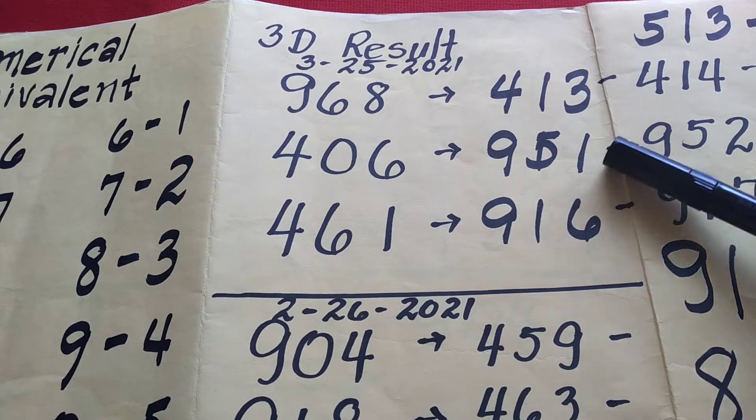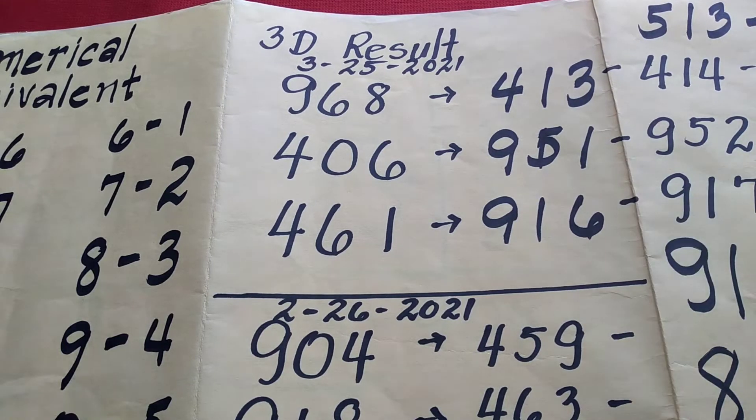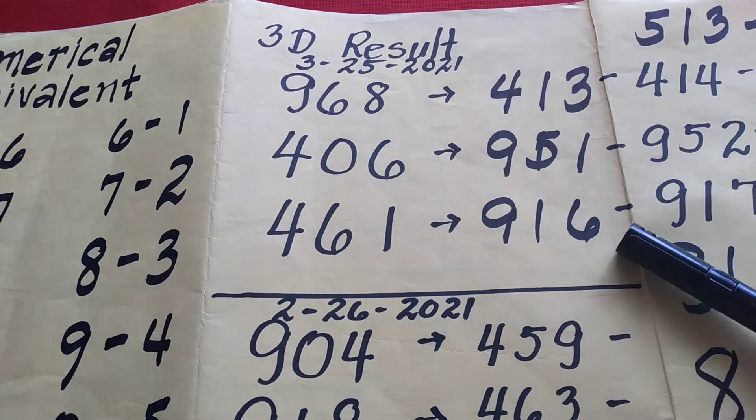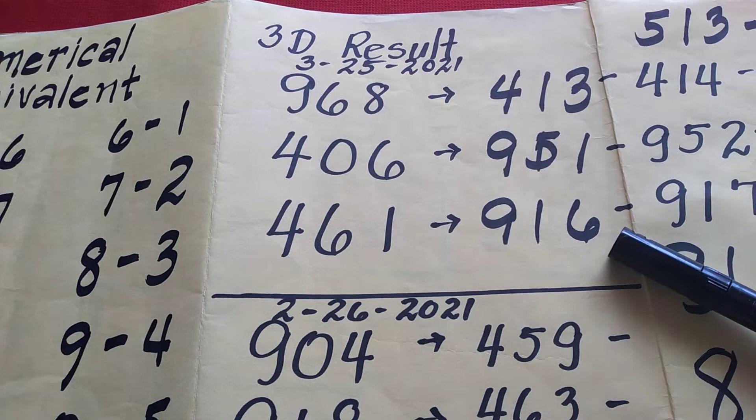Sa 9 p.m., lumabas ang 4, 6, 1. So ito ay nagiging 9, 1, 6.